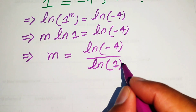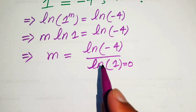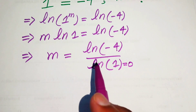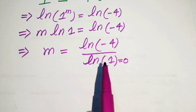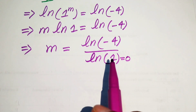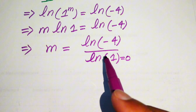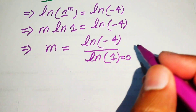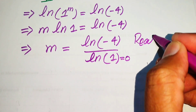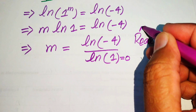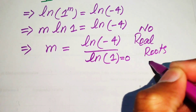Here we know that the value of log 1 equals 0, but in the numerator we have some nonzero number. Something divided by 0 equals infinity, or in other words, this equation cannot give us a real root — so this equation has no real roots.